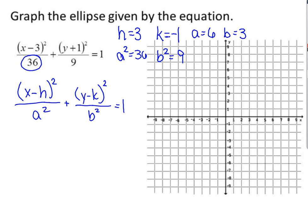To find our foci, we need the c value. We use c = √(a² − b²). Our a² is 36 and b² is 9, so c = √27, which is approximately 5.2.